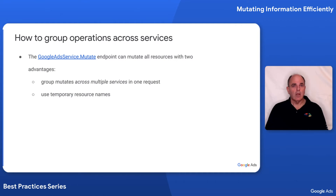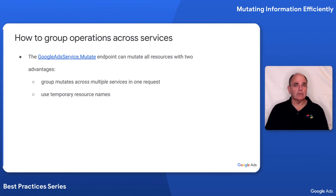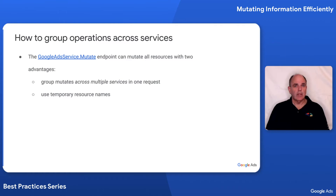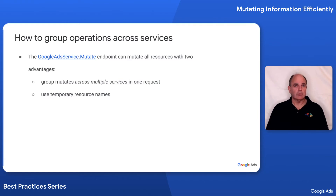The answer is that there's a special service called the Google Ads Service Mutate. This service can perform mutates across multiple services in a single request. It has a secondary advantage in that it allows you to use temporary resource names.